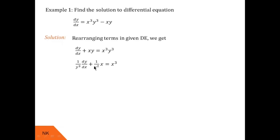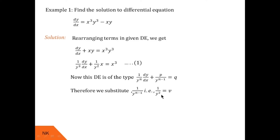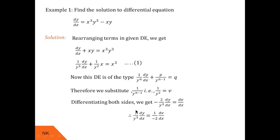After dividing by y³ we get: (1/y³)·dy/dx + x·(1/y²) = x³. Now following Step 2, we substitute v = 1/y². Differentiating both sides gives −2/y³ · dy/dx = dv/dx, so 1/y³ · dy/dx = −(1/2)·dv/dx. We substitute this and v into equation 1.